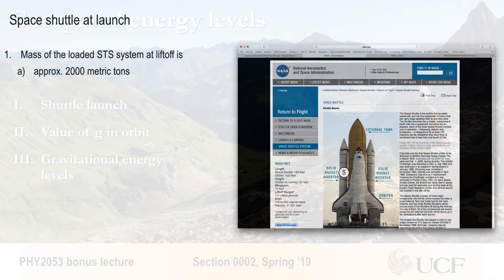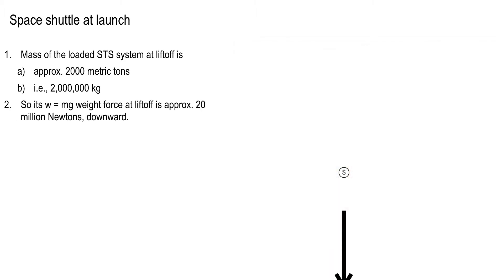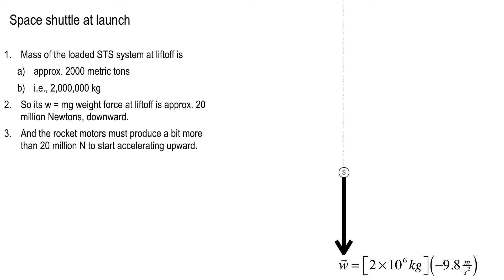Let's take a look at the specs here. The space shuttle launch system — the STS — at liftoff: the external liquid fuel tank, the two solid rocket boosters, plus the shuttle itself with all its payload and crew, is about 2,000 metric tons. That's 2 million kilograms — that's a lot of mass. So the weight force is going to be about 20 million newtons downward.